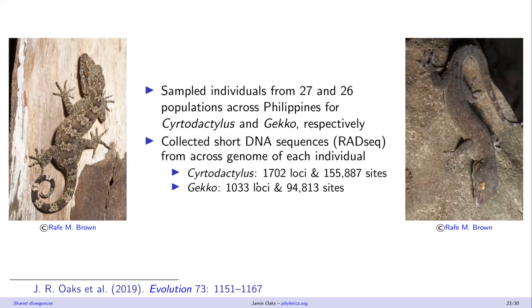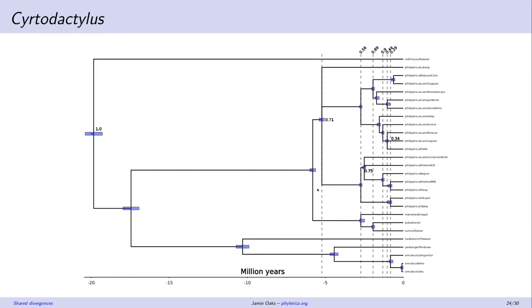Okay, so we collected some genomic data from 26 and 27 and 26 populations of two different genera of geckos from across the Philippines. We've got between 1000 and 2000 loci with about 100 to 150,000 sites, so moderately sized genomic data sets from these two different groups of lizards. And we're finding shared divergences. So this is Cyrtodactylus, the bent-toed geckos.